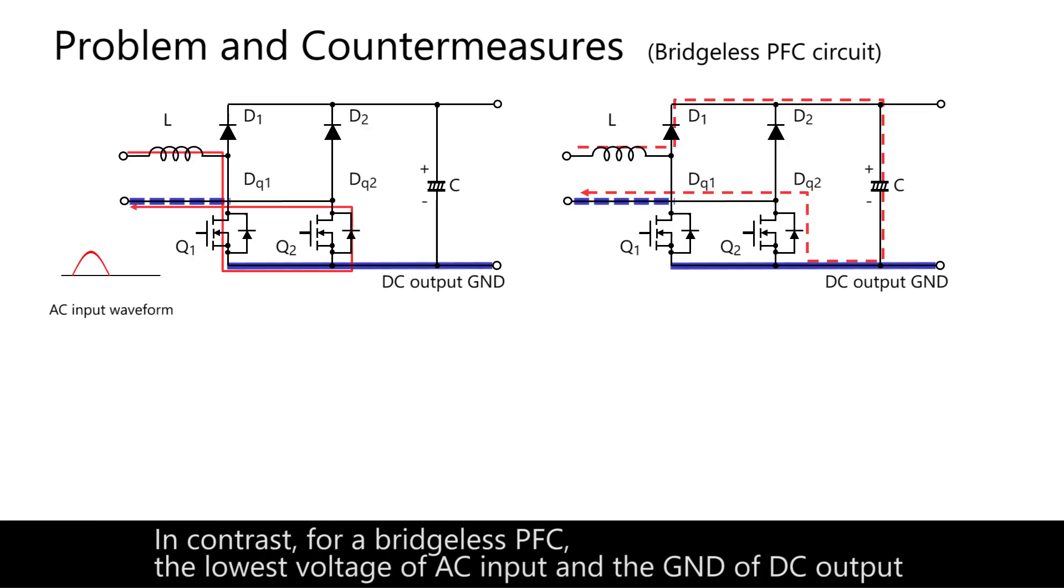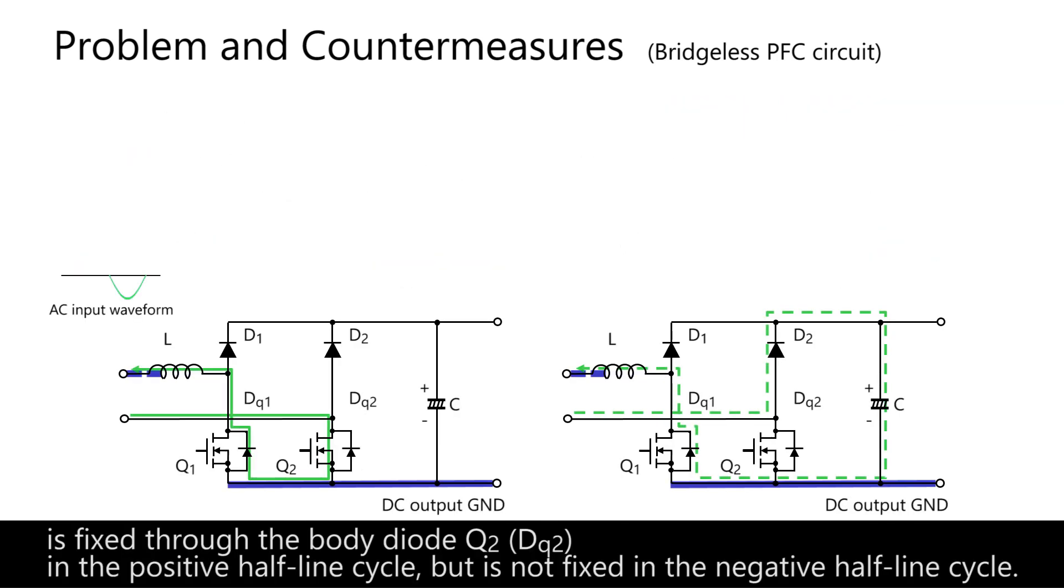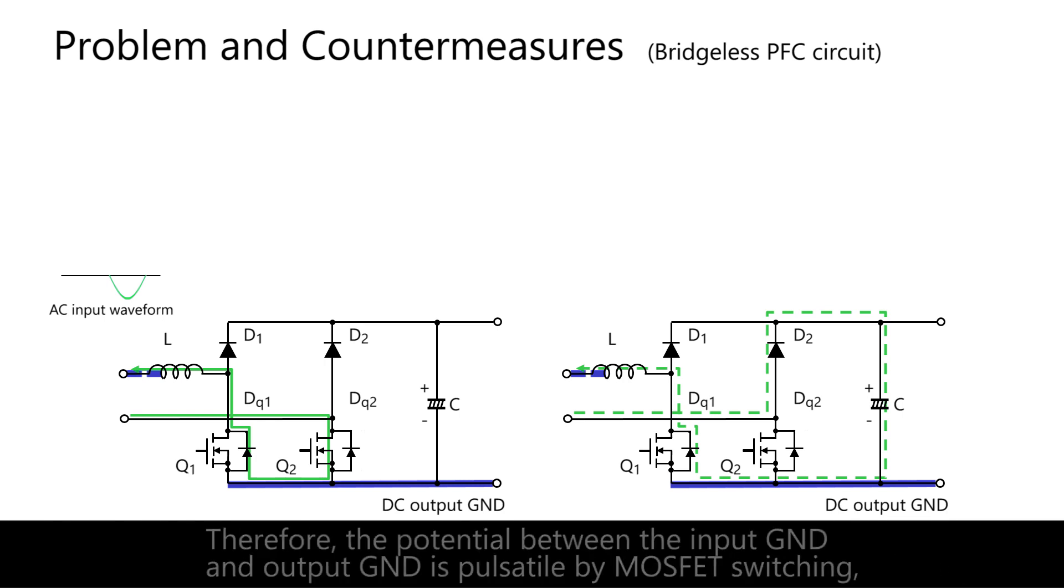In contrast, for a bridgeless PFC, the lowest voltage of AC input and the ground of DC output is fixed through the body diode Q2 in the positive half-line cycle, but is not fixed in the negative half-line cycle.